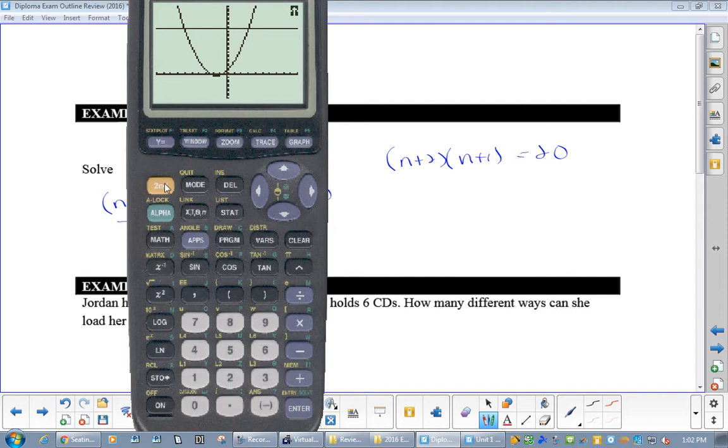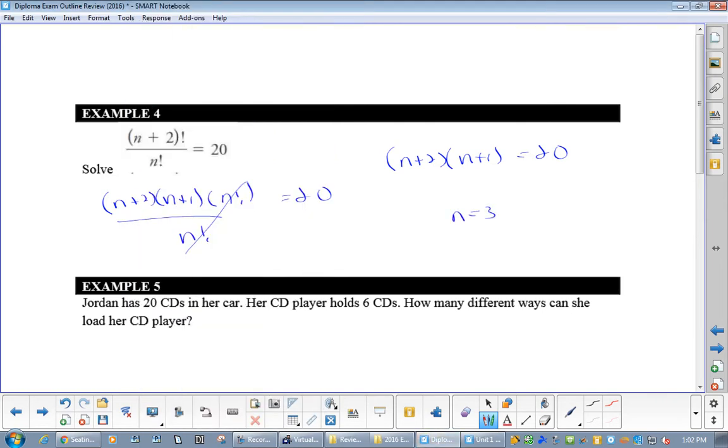We want the positive answer because n is the number. So, we're going to go second trace, five, and get over here. Enter, enter, enter. And you will get n to equal three. Okay. And you can try it out, right? So, you go three plus two times three plus one. That is five times four. Twenty equals twenty, right? You got it. The other one was negative six, but you can't have a negative n.